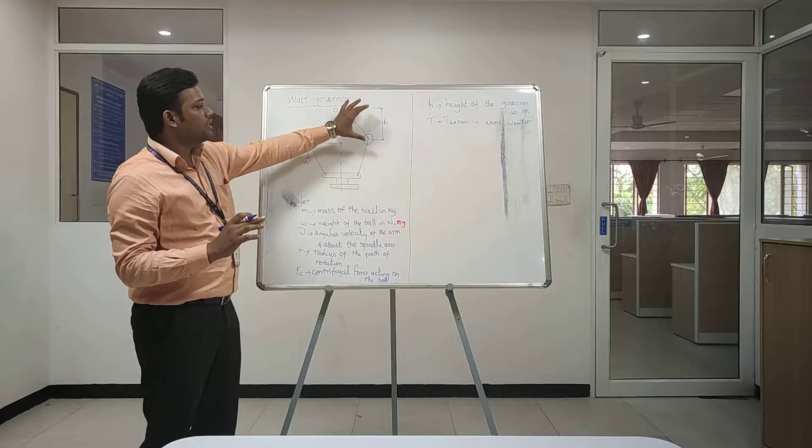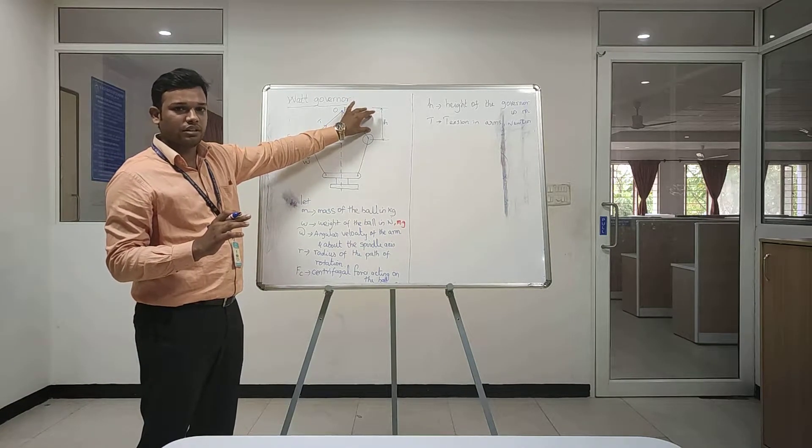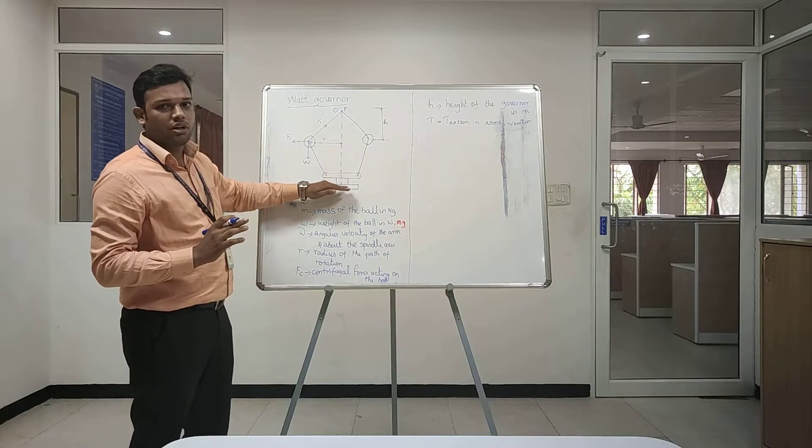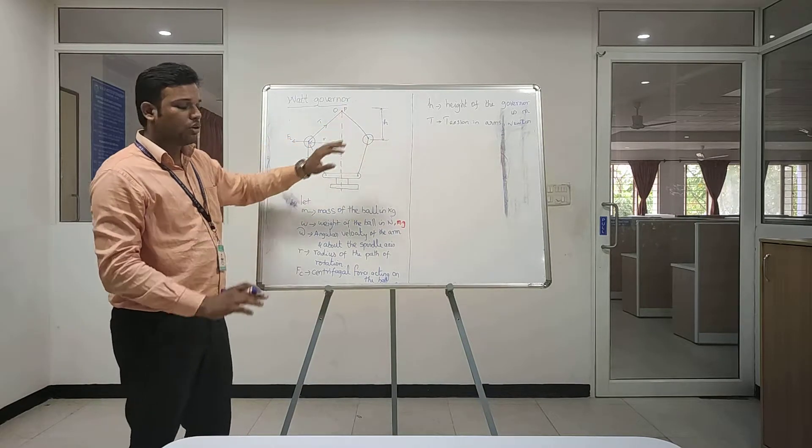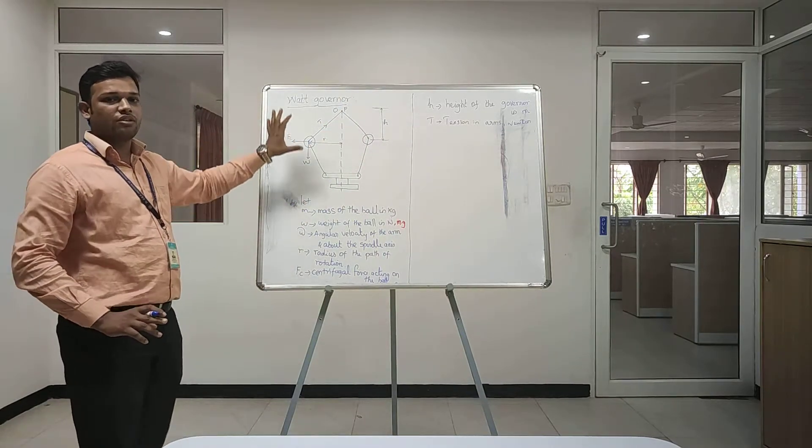When sleeve goes up, the height value will be low. When sleeve comes down, the height value will be high. These are some of the components of the Watt Governor.